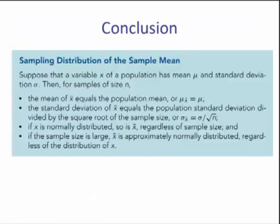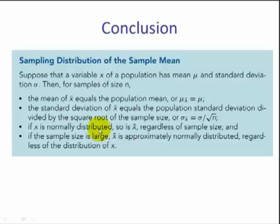In conclusion, the sampling distribution of the sample mean: the mean of the X-bars equals the population mean, and the standard deviation of X-bar equals the population standard deviation divided by the square root of the sample size — it always gets smaller. If the random variable X is normally distributed, X-bar will be normally distributed regardless of sample size. If the sample size is large — rule of thumb n equals 30 or more — X-bar is approximately normally distributed regardless of the distribution of the random variable. Any population shape will become normal.